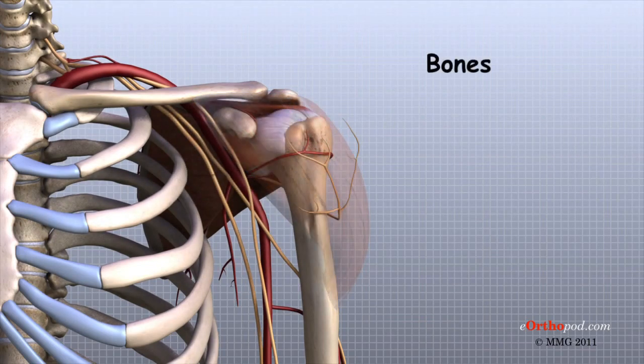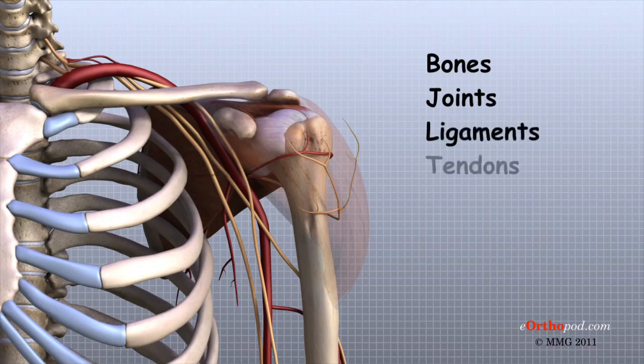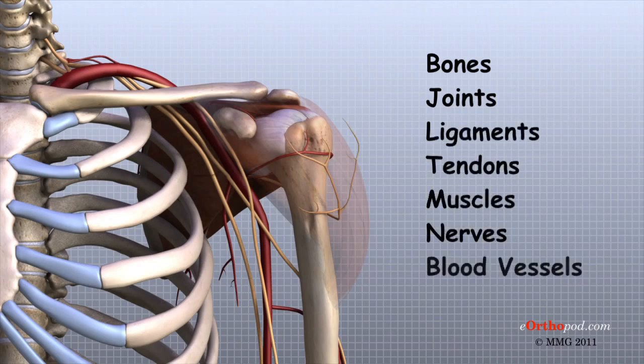These include bones, joints, ligaments, tendons, muscles, nerves, blood vessels, and bursa.